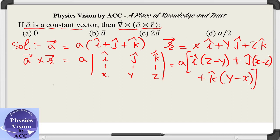This is the product. Now we will take the cross product with del of this vector. When we take the del of this vector, what we will get?